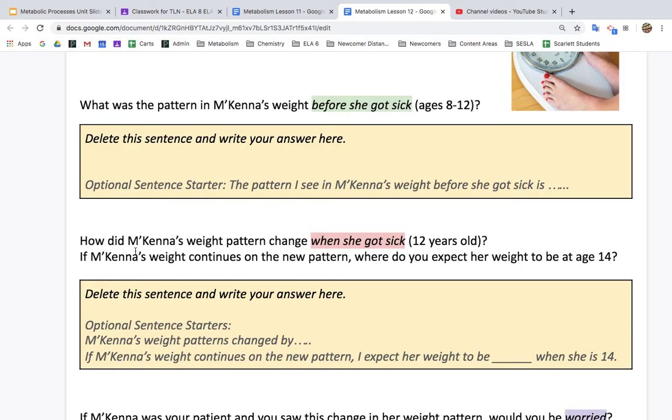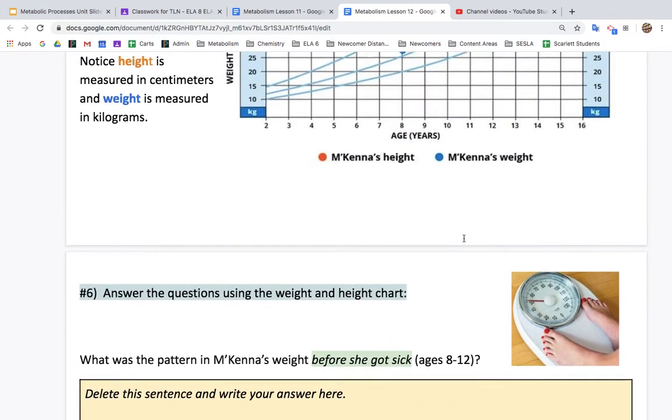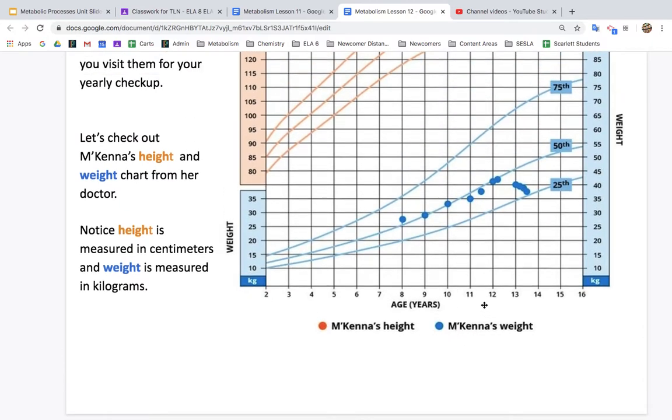Next, how did McKenna's weight pattern change when she got sick at 12 years old? Let's see. So what happened when she was 12? Again, we're just looking at weight. So when she was 12, whoa, it looks like she went to the doctor a few times here. And her weight is a lot lower than average.